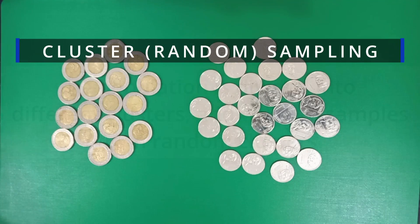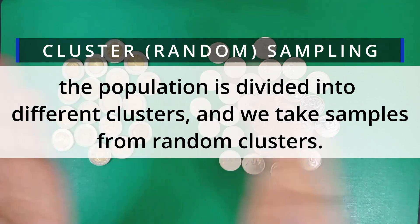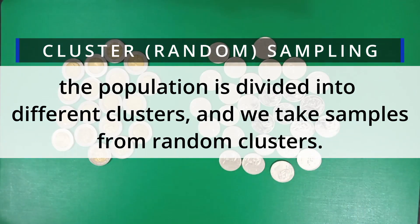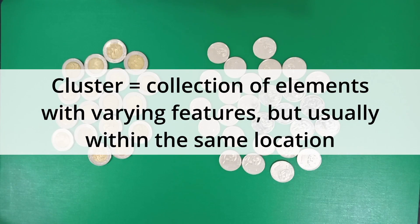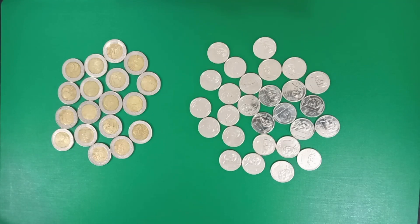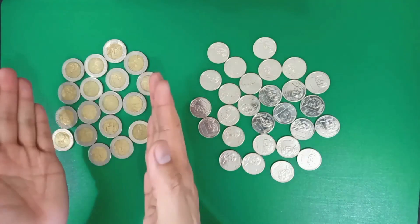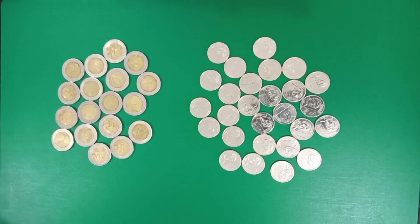Cluster random sampling is another example of probability sampling wherein the population is divided into different clusters. You can define a cluster as a collection of elements — in this case sampling units — based on a particular feature. The most commonly used theme to cluster a population is geographic locations such as country or city of residence. We use cluster random sampling if we think that each cluster is composed of different elements which are more or less a microcosm representation of the entire population.